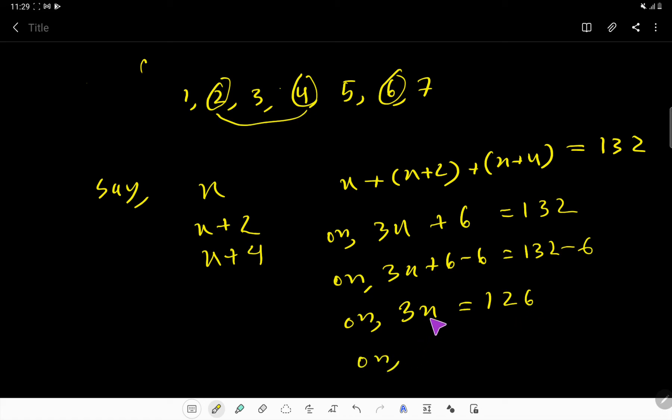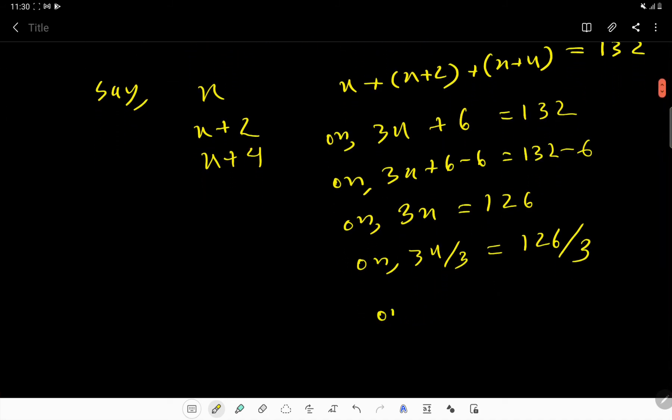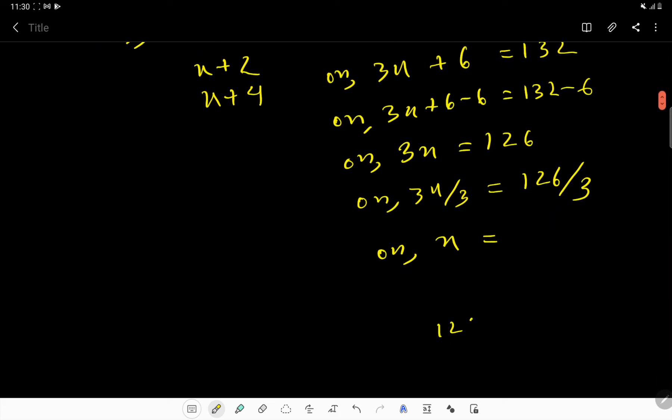So now divide both sides by 3. So we are getting here x. This 3, this 3 cancel each other. So we are getting x. Then if I divide 126 by 3, we get 12, 6, 42, right?